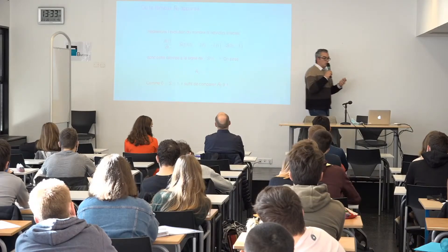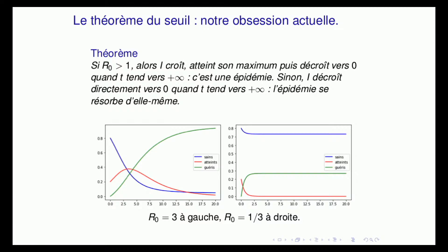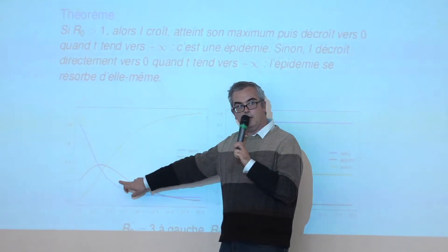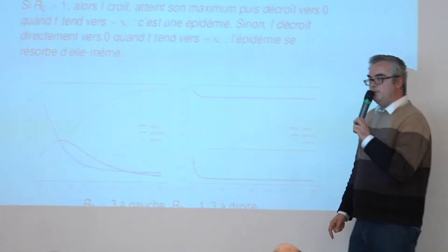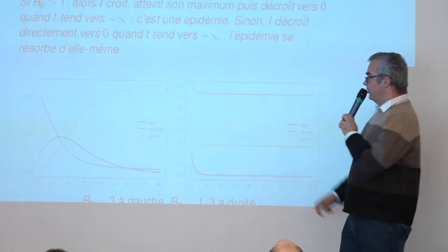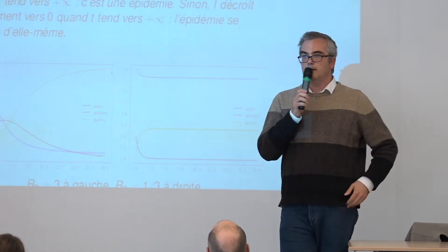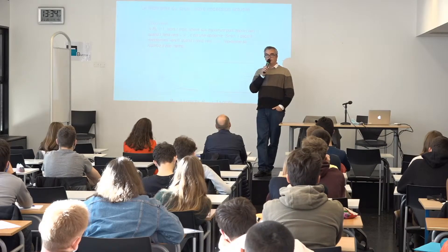C'est le théorème du seuil. Si R0 est strictement plus grand que 1, I croît, atteint son maximum, puis décroît et tend vers 0. C'est la situation présentée dans le premier graphique : R > 1, le nombre de malades augmente, passe par un maximum et décroît pour tendre vers 0. Maintenant, si R0 est plus petit que 1, on est directement décroissant — pas de phase de croissance. En pratique, ça veut dire que l'épidémie s'éteint d'elle-même. Pas besoin de traitement, pas besoin de vaccin.